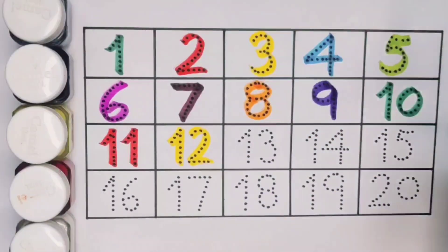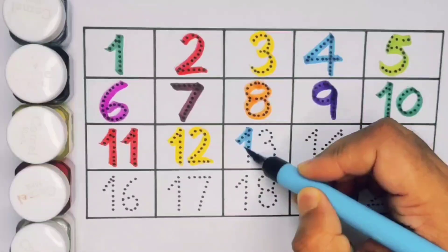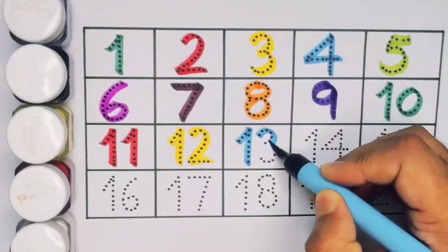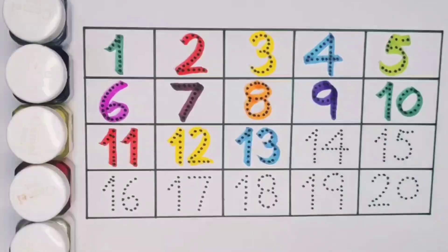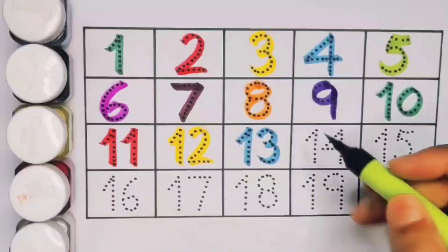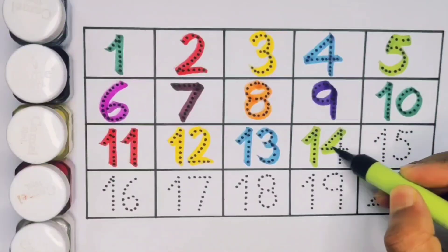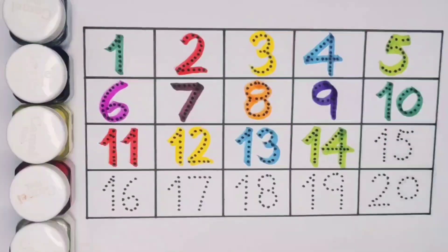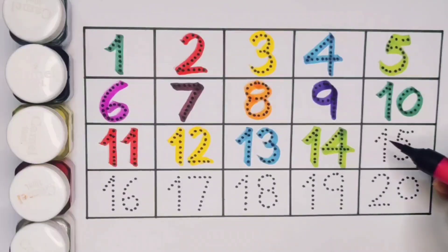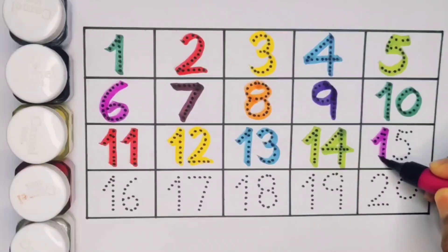Next kids 13, 1, 3, 13, number 13. Next kids 14, 1, 4, 14, number 14. Next kids 15, 1, 5, 15.